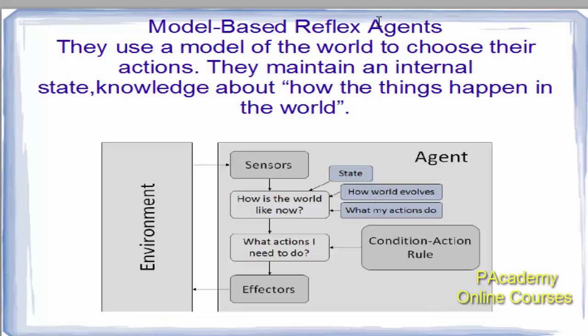Model-based reflex agents add one step further to simple reflex agents. They use a model of the world to choose their actions and maintain an internal state — knowledge about how things happen in the world. A model-based reflex agent can handle partially observable environments. Its current state is stored inside the agent in some structure that describes parts of the world which cannot be seen, and it maintains an internal model that depends on the percept history, reflecting some of the unobserved aspects of the current state.